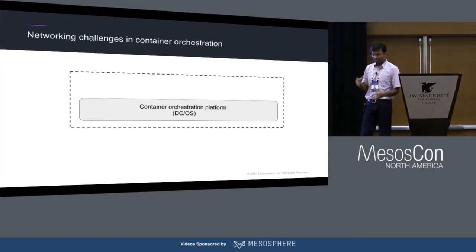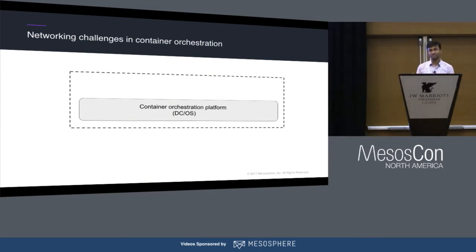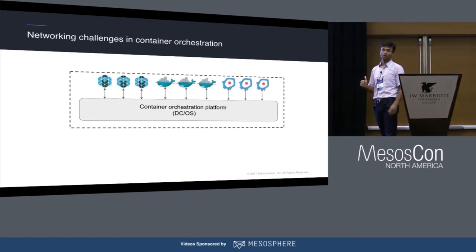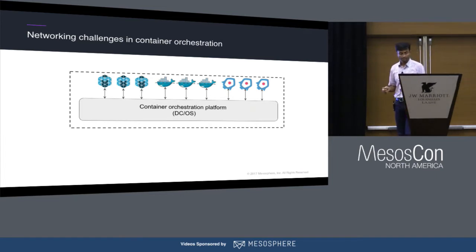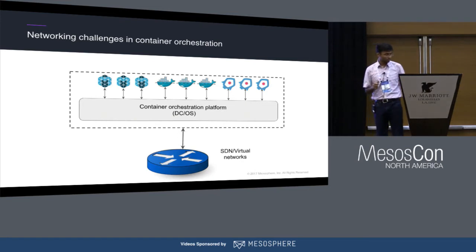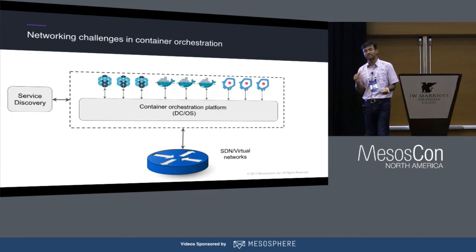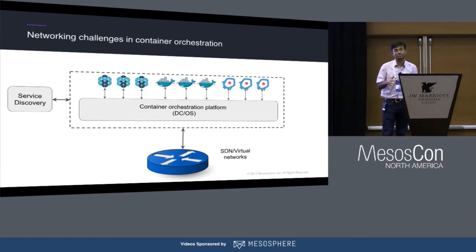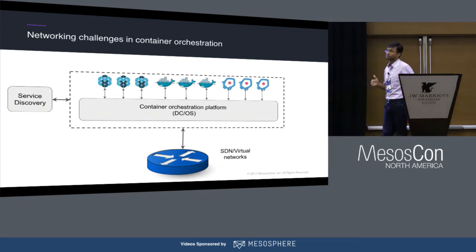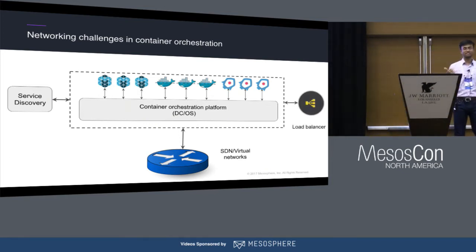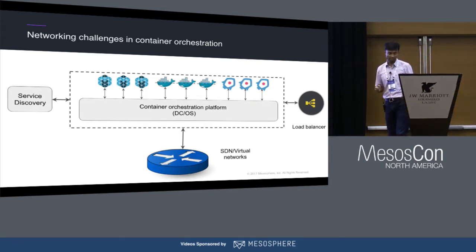Before we look at the specific DCOS networking stack, we want to understand the challenges in container networking. The first challenge is providing connectivity to containers, which are different from hosts or VMs. Second, once you resolve connectivity, you want services running in containers to be able to talk to each other — so you need service discovery — and that mechanism must update and reflect changes as containers keep dying and rescheduling on different hosts. Finally, you want containers to have multiple instances sitting behind a load balancer that dynamically reflects container lifecycle changes.